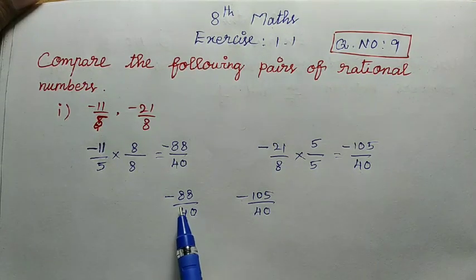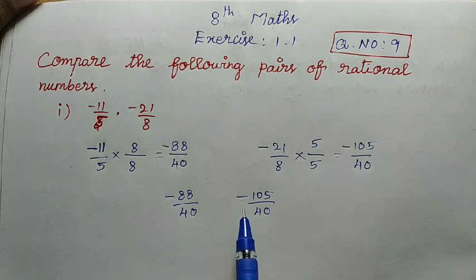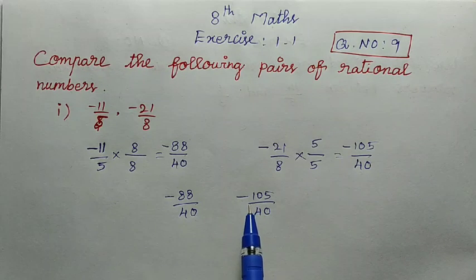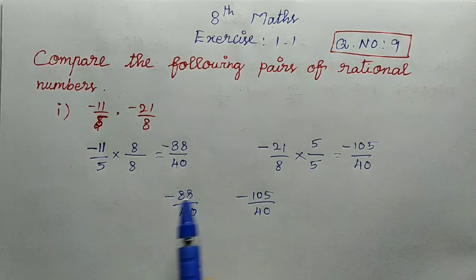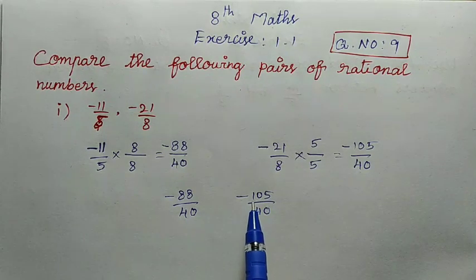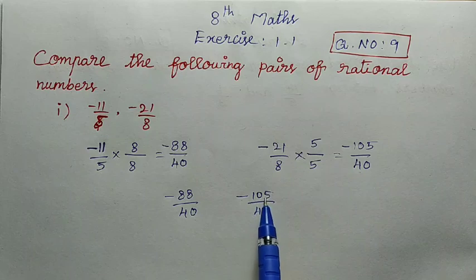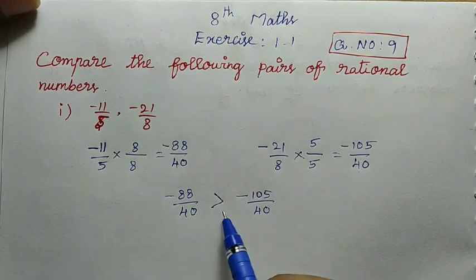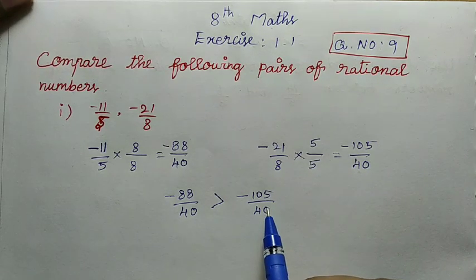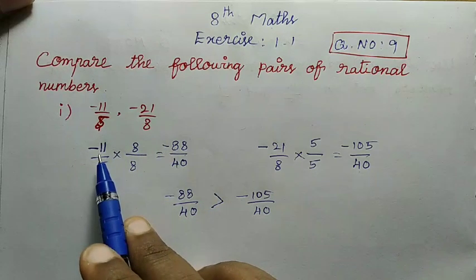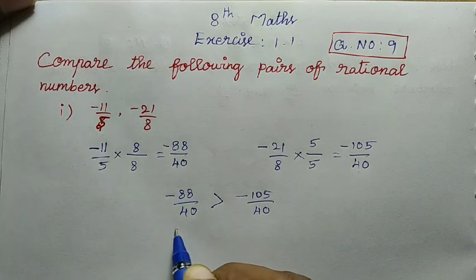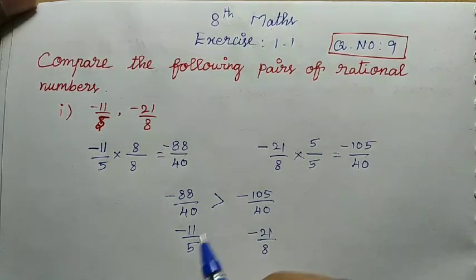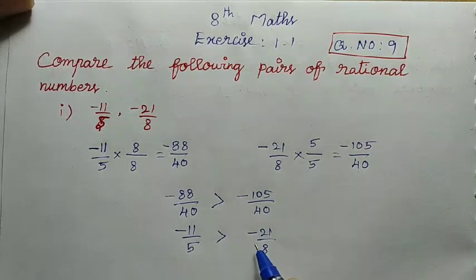With negative signs, when the numerator is greater the value is actually smaller. On a number line going 0, minus 1, minus 2, minus 3 — following the same procedure, 105 is the greater number but being negative makes it the smallest. So minus 88 divided by 40 is greater than minus 105 divided by 40. Converting back: minus 11 divided by 5 is greater than minus 21 divided by 8.